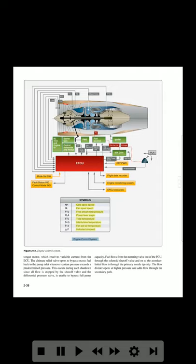The torque motor, which receives variable current from the EEC, controls the metering valve. The ultimate relief valve opens to bypass excess fuel back to the pump inlet whenever system pressure exceeds a predetermined level — this occurs during each shutdown since all flow is stopped by the shutoff valve and the differential pressure valve is unable to bypass full pump capacity. Fuel flows from the metering valve through the solenoid shutoff valve and onto the atomizer; initial flow is through the primary nozzle tip only, and the flow divider opens at higher pressure to add flow through the secondary path.